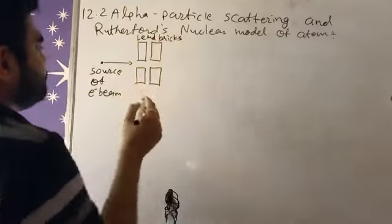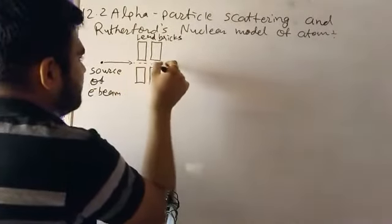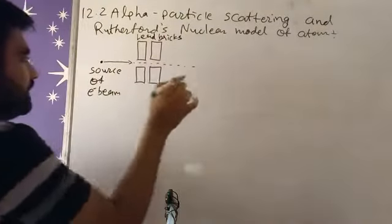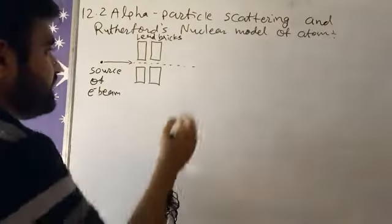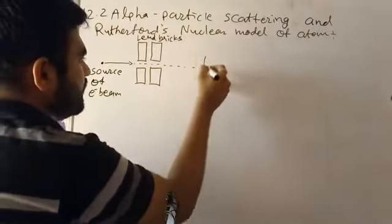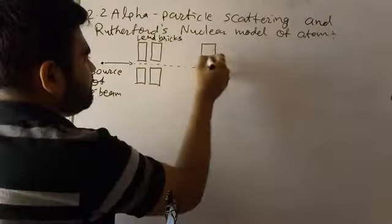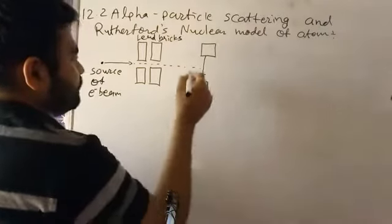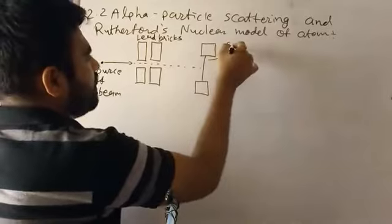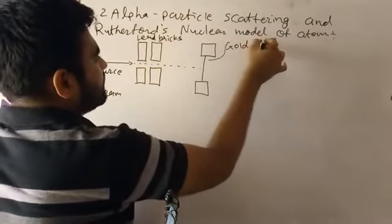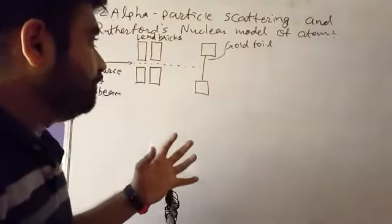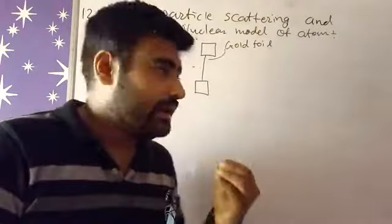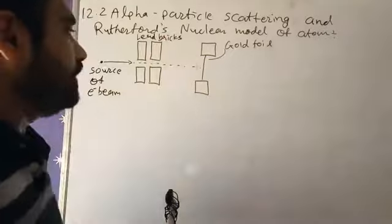Right? Okay. Then after traveling through this surface, in the gap between these lead bricks, we have one gold foil which is situated between two stands. So this is our gold foil, just like aluminum foil we have to preserve the food. Right? So here we use gold foil.